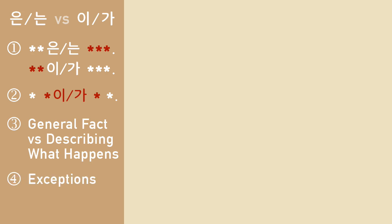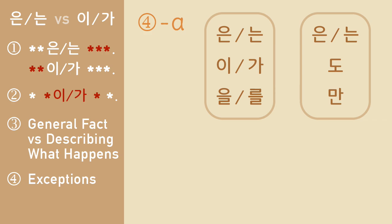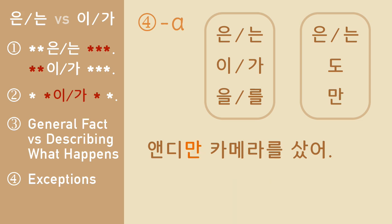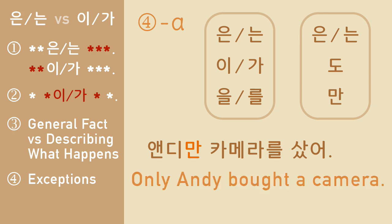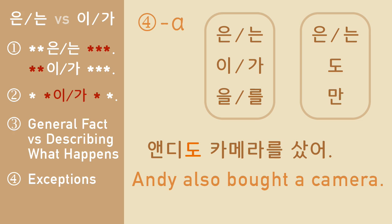You also have to know about the exceptions. 은/는, 이/가, 을/를 can be replaced by 은/는, 도, or 만 in some cases — though this 은/는 and that 은/는 are not really the same. For example: Andy가 카메라를 샀어 means Andy bought a camera. Andy만 카메라를 샀어 means no one else but Andy bought a camera. Andy도 카메라를 샀어 means Andy also bought a camera, just like some other guy did.